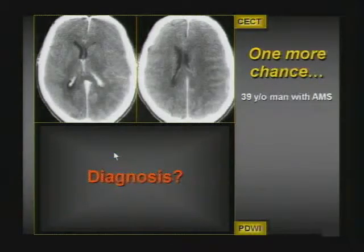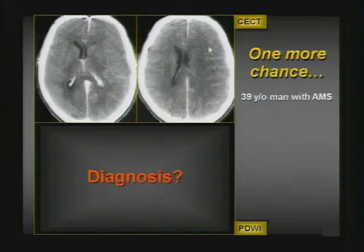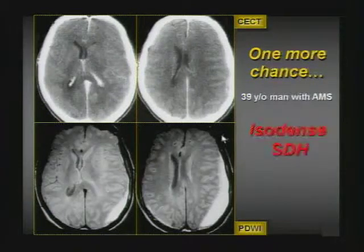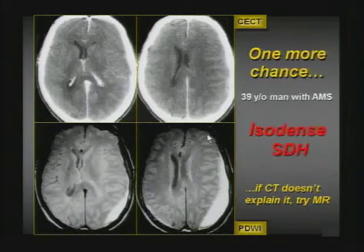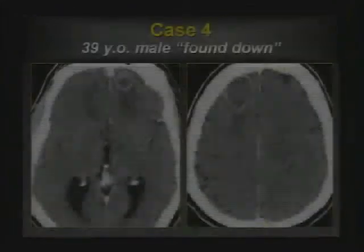One more chance on this diagnosis. You have this patient with altered mental status. The left lateral ventricle is a little bit effaced, but nothing is really definite even with contrast. So you do the MR, and clearly the extra-axial collection presents itself. If CT doesn't make the diagnosis and indeed there's a neurological event, then go on to MR.